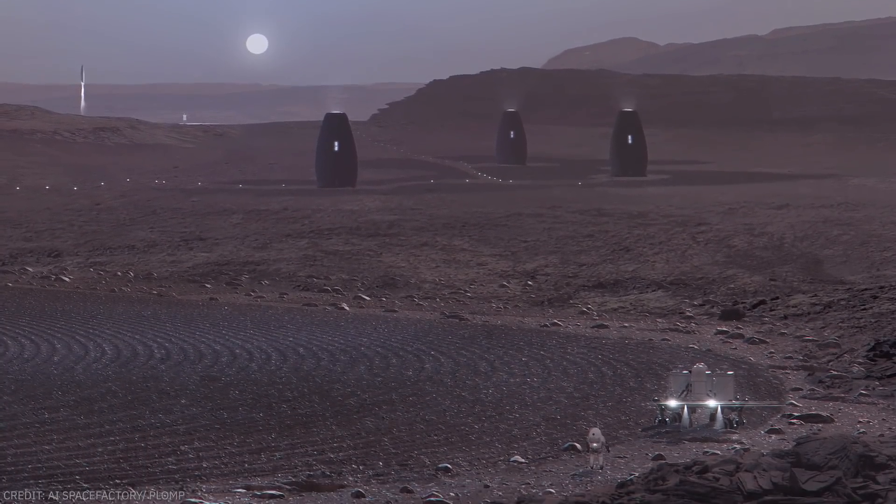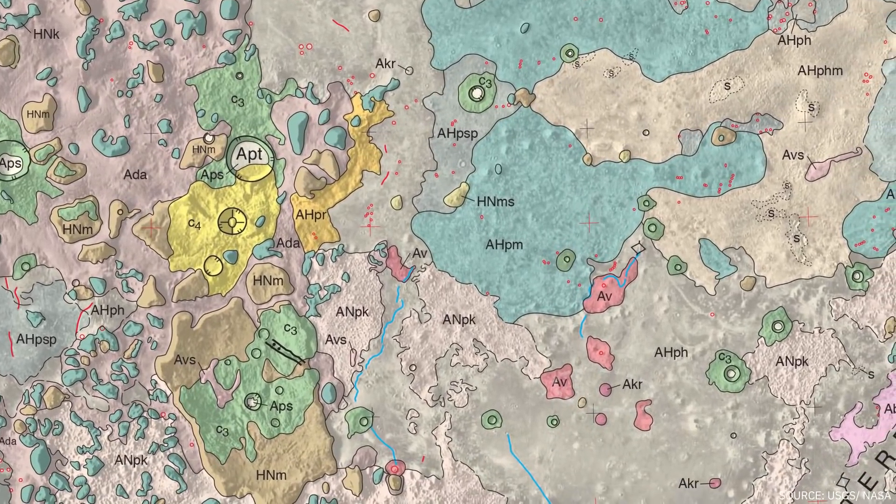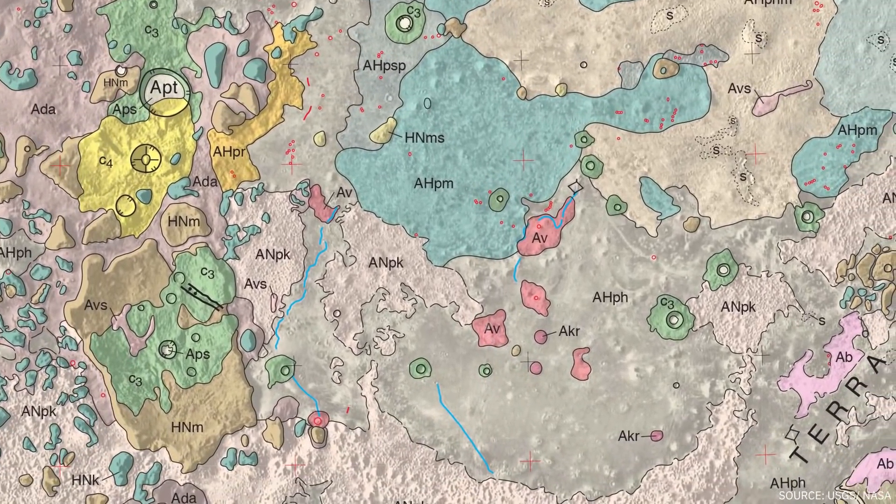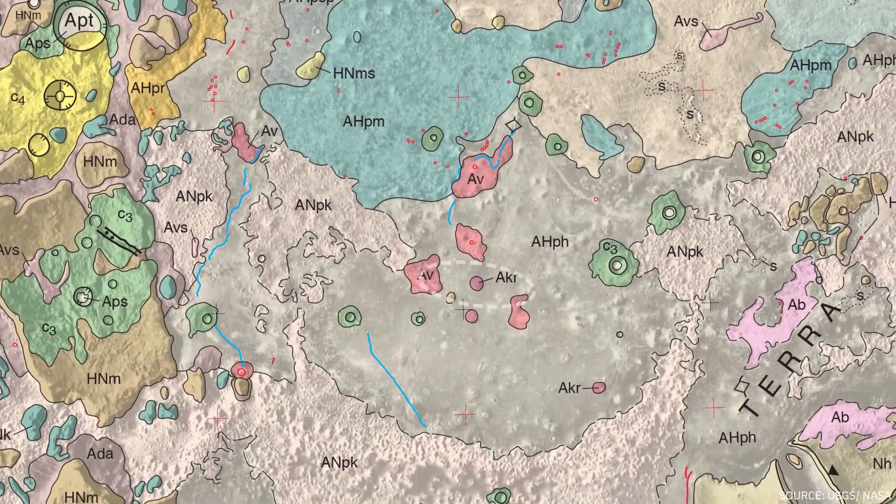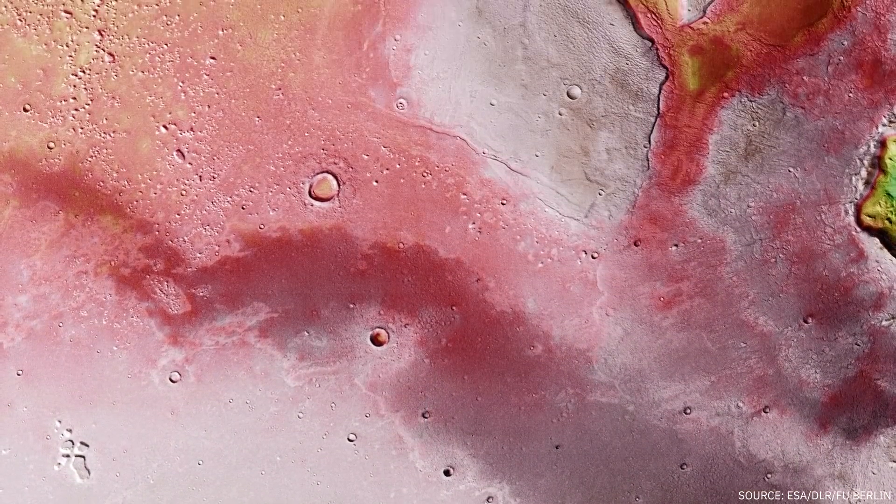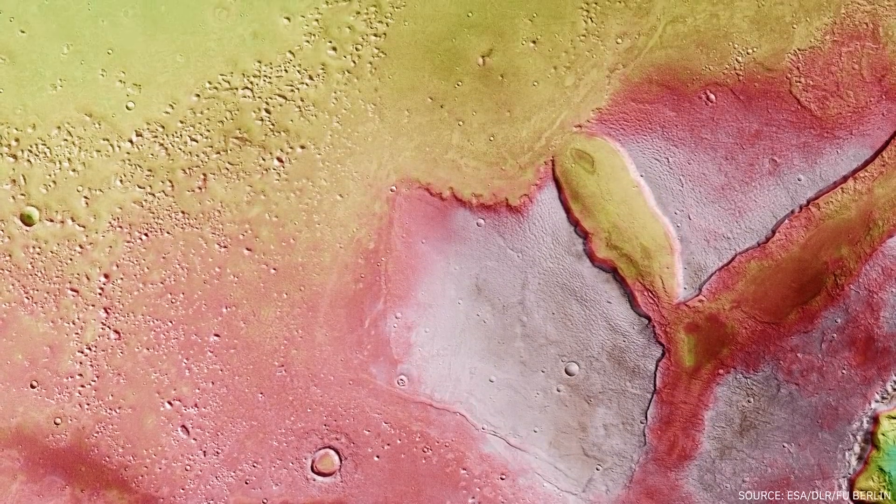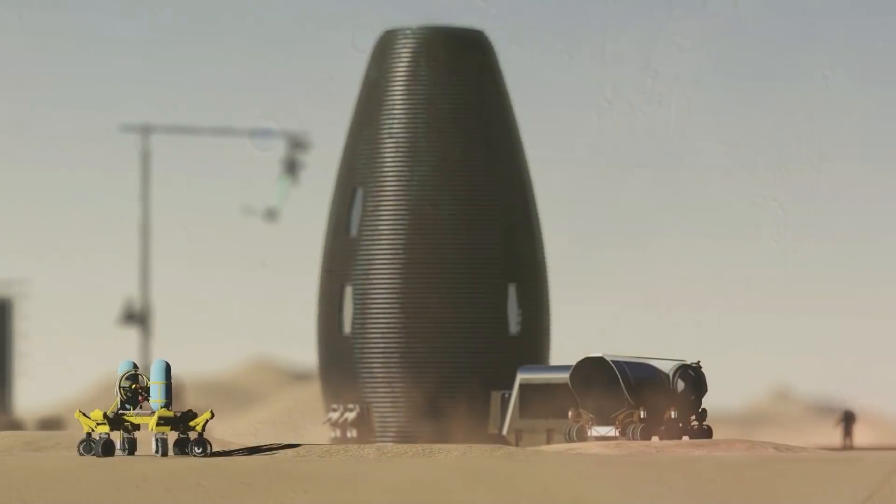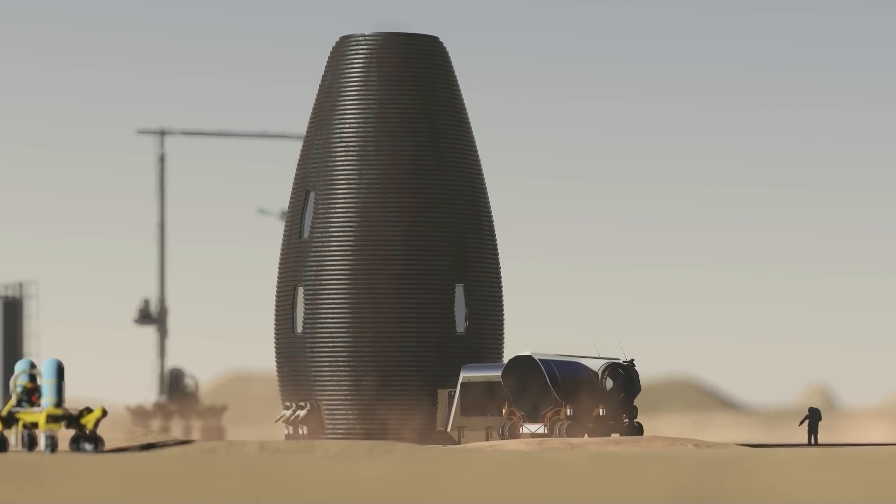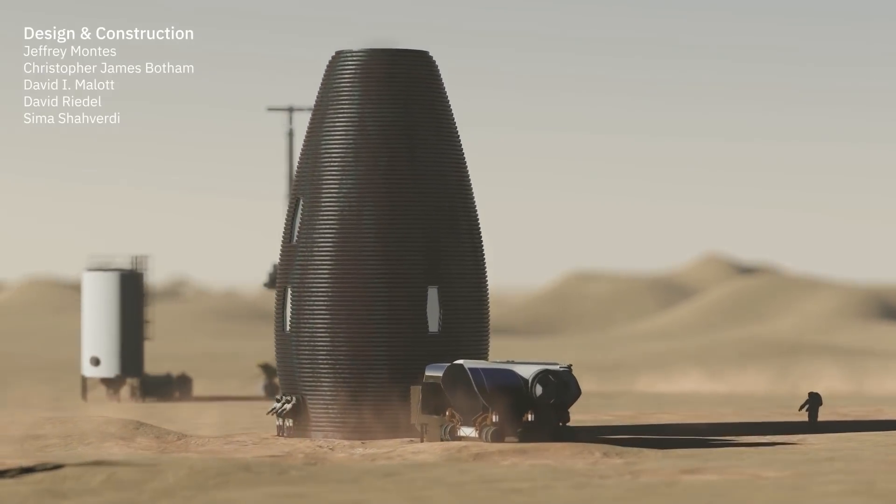The site features concentrated volcanic rock deposits covered only by a thin layer of loose regolith, making them accessible as an in-situ resource. Finally, Cydonia sits at 11 kilometers below mean elevation, which offers higher protection from harmful cosmic radiation due to the greater thickness of the atmosphere overhead. This site provides all the assets required for a safe and sustainable human presence on Mars.